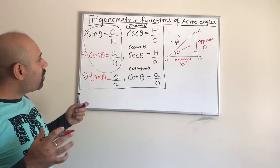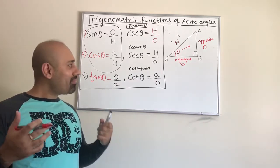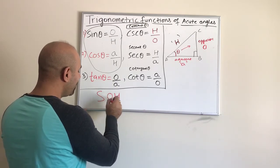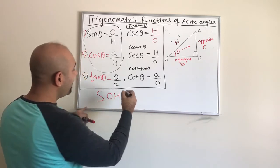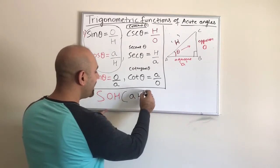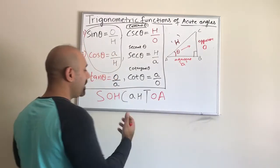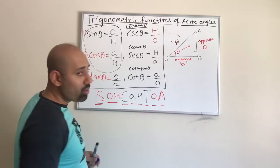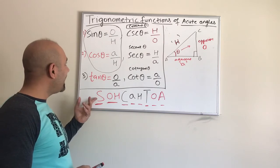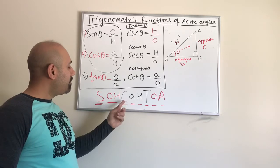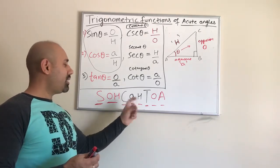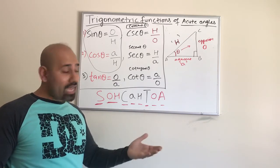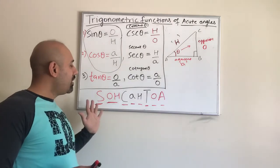There's a popular shortcut to remember these ratios called SOH-CAH-TOA. Sine is the ratio of Opposite over Hypotenuse — SOH. Cosine is the ratio of Adjacent over Hypotenuse — CAH. Tangent is the ratio of Opposite over Adjacent — TOA. Then the reciprocals: cosecant is H over O (reciprocal of sine), secant is H over A (reciprocal of cosine), and cotangent is A over O (reciprocal of tangent).